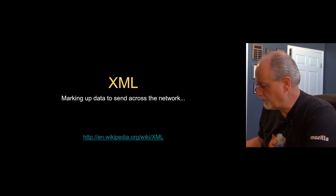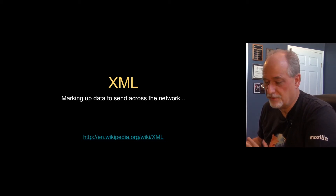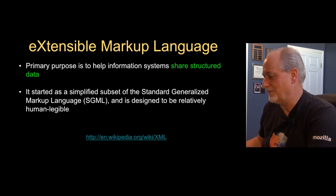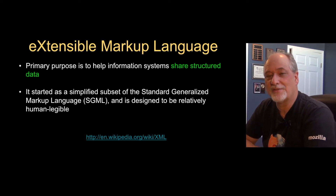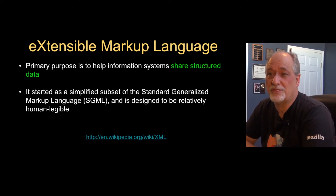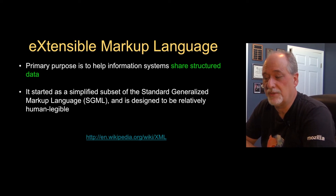One of the two ways that we mark up data is XML, the other is JSON. First we'll talk about XML. XML stands for Extensible Markup Language. There were a number of markup languages in the 90s — ways to send data between computers.